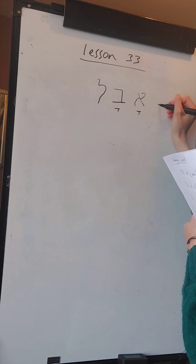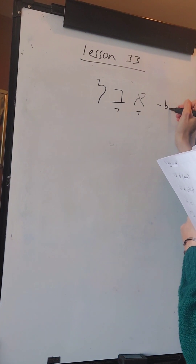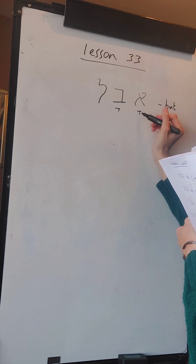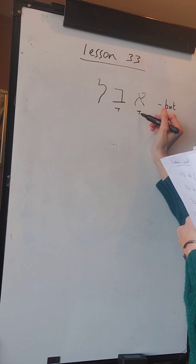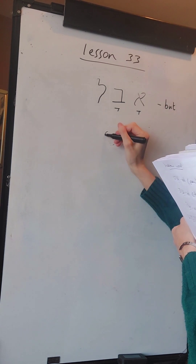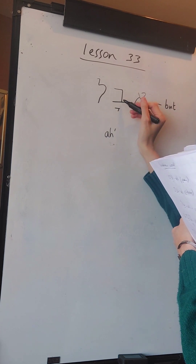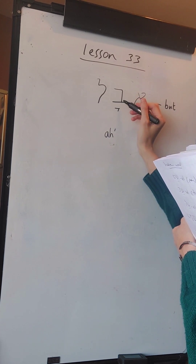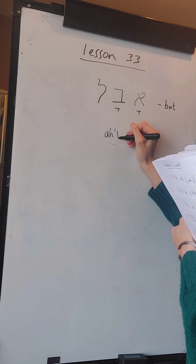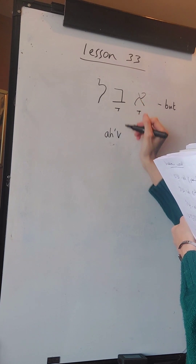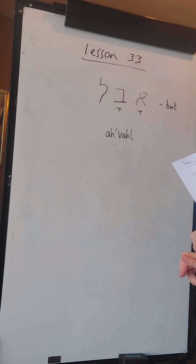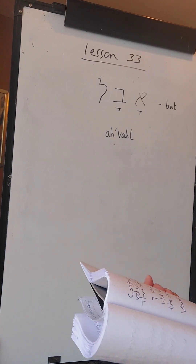This is the word for 'but' and it reads as follows - Alef is silent, so it goes straight to the sound of the vowel which is A. Then the next Hebrew consonant is the Vet, which sounds as VA with the A vowel. And the Lamed at the end - AVAL, which means but.